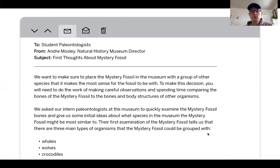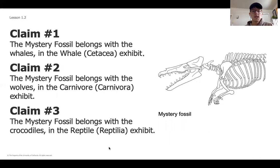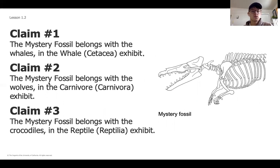We've narrowed it down to three specific organisms: either a whale, a wolf, or a crocodile. These are the three claims we'll work through as paleontologists in this unit. Here's our fossil — our options are that it belongs in an exhibit with whales, wolves, or crocodiles with the reptiles in the museum. We'll decide which one we as paleontologists want to argue is most closely related to this mystery fossil.